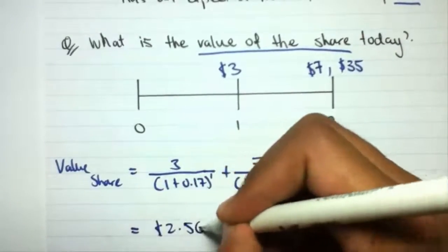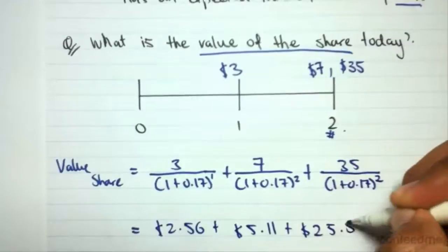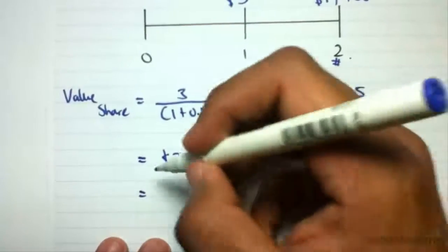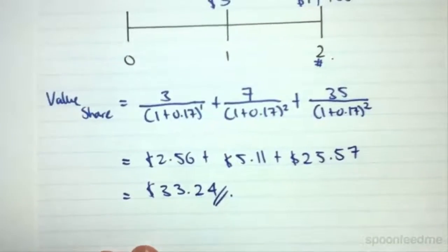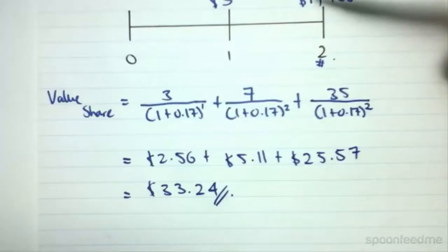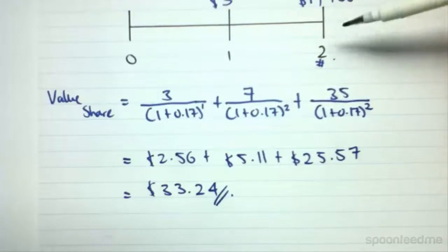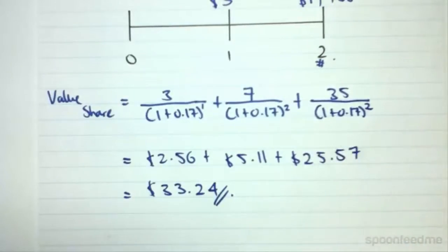Calculating: $2.56 + $5.11 + $25.57 gives a final share value of $33.24. The key point from this example versus the previous one is that you can receive both the dividend and the selling price of a share in the same period — both must be discounted at the same factor. That concludes this lesson on evaluating shares.